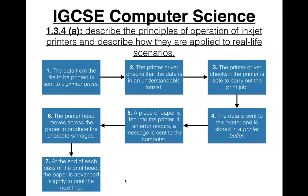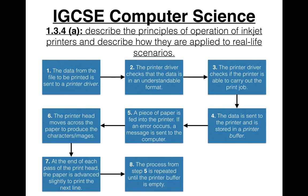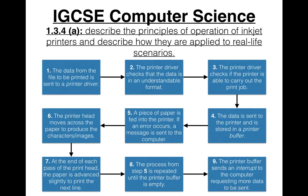At the end of each pass of the printhead, the paper is advanced slightly to print the next line. The process from step 5 is repeated until the printer buffer is empty. Finally, the printer buffer sends an interrupt — essentially a signal — to the computer requesting more data to be sent.